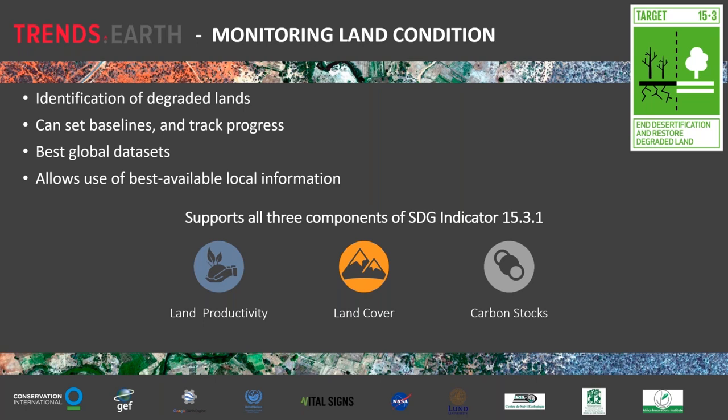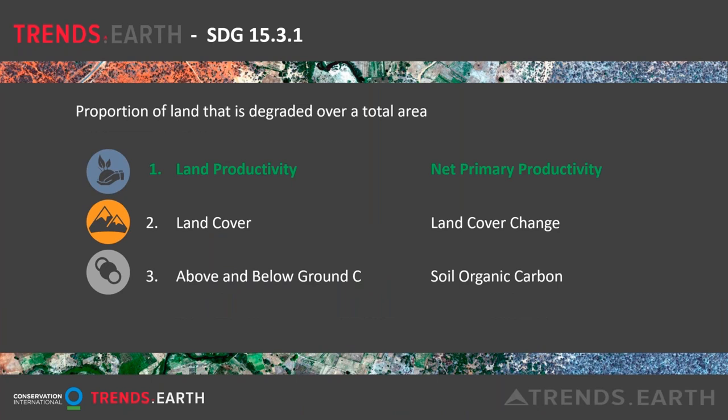Trends.Earth supports all three indicators for monitoring SDG indicator 15.3.1: land productivity, land cover, and carbon stocks. The overall goal is to assess the proportion of land that is degraded over total land area. For land productivity, we use satellite imagery to assess net primary productivity. Land productivity is the biological productive capacity of the land — the source of all food, fiber, and fuel that sustains humans. Since this can't be directly measured from space, we use proxies measurable via remote sensing, specifically net primary productivity, or NPP: the net amount of carbon assimilated after photosynthesis and autotrophic respiration, typically measured in kilograms per hectare per year.